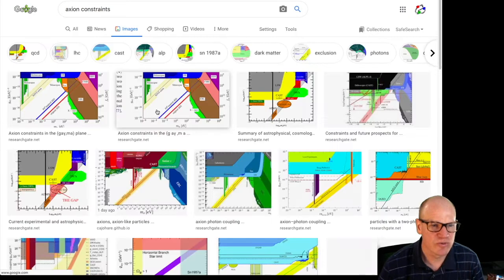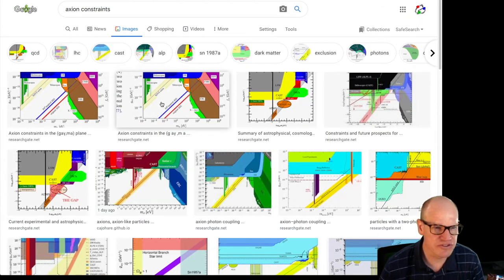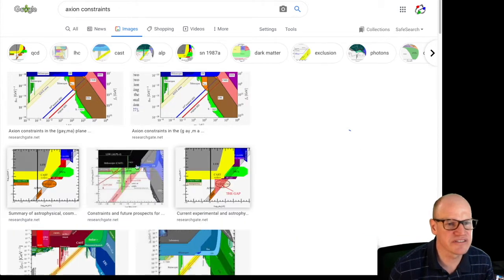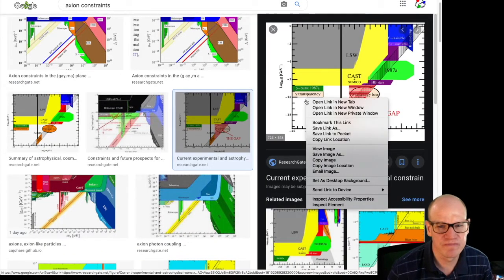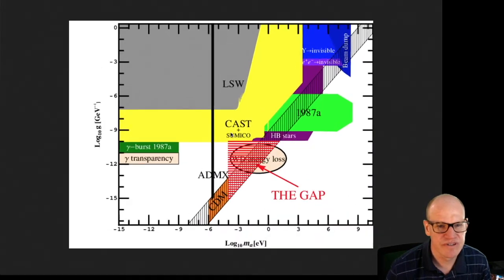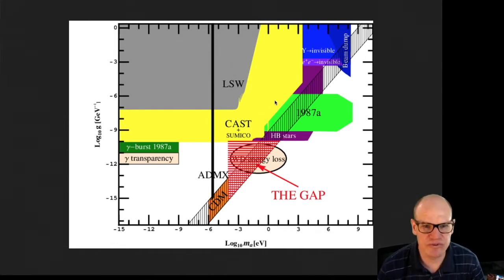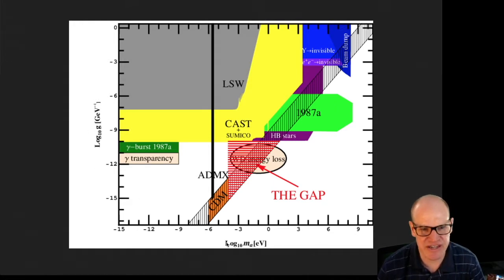We're going to be looking specifically at two different experiments. The experiments we talked about last time were constraints from light-shining-through-wall type results. Here is a plot — they have a bunch of experiments done at particle accelerators. There are constraints on axions: this axis is the coupling of the axion to the photon, and this is the mass of the axion.